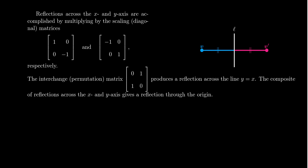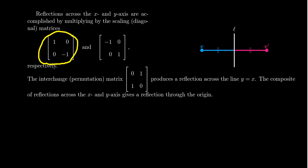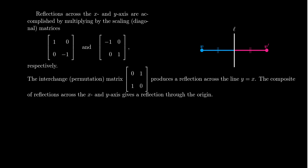We'll keep things simple and focus on reflections across the x-axis and y-axis first. Consider the matrices [1, 0; 0, -1] and [-1, 0; 0, 1]. These are diagonal matrices — in fact, they are elementary matrices of scaling type. Previously we required the non-one diagonal entries to be positive for dilations and contractions, but now we're allowing negatives, which causes a reflection.